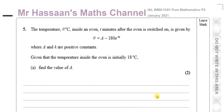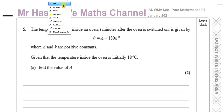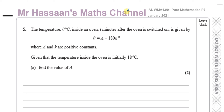Welcome back. This is question number 5 from the P3 International A-Level Edexcel January 2021 paper. This question is about exponentials and logarithms. We have a temperature theta degrees Celsius inside an oven, T minutes after the oven is switched on, given by theta equals A minus 180 times E to the power of minus KT, where A and K are positive constants. Given that the temperature inside the oven is initially 18 degrees Celsius, find the value of A.